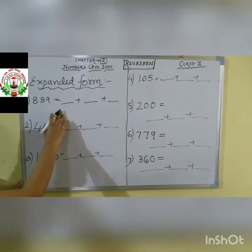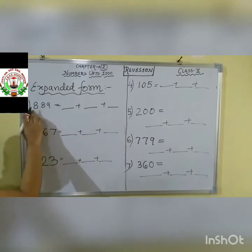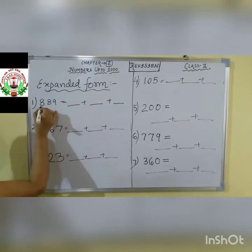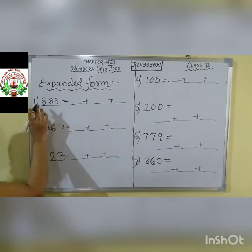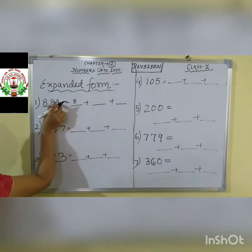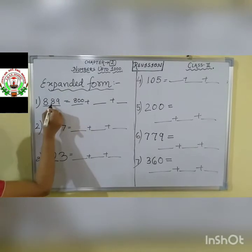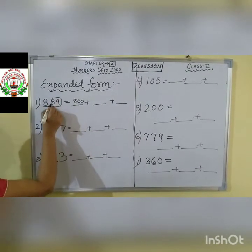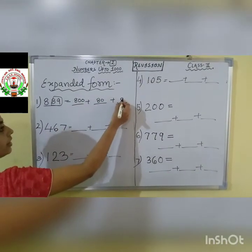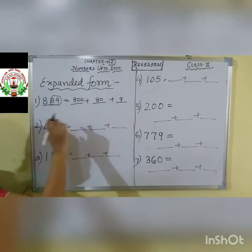So we will be seeing expanded form. First question: 889. We are saying it together as eight hundred and eighty-nine. How to write down in the expanded form? Start from the hundreds place — 800 — write down 8 with two zeros. Then 80 — write down 80. Then what we are saying: 9 — write down 9. So 889 = 800 + 80 + 9.